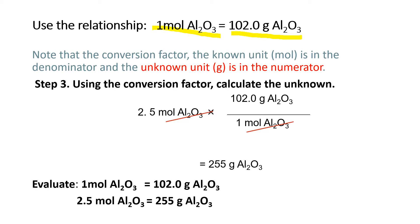Step 3, using this conversion factor, we can now calculate the unknown — grams of aluminum oxide. The given is 2.5 moles of aluminum oxide, times the conversion factor: 102 grams of aluminum oxide over 1 mole of aluminum oxide. Cancel mole of aluminum oxide — we have 2.5 times 102, which equals 255 grams of aluminum oxide.